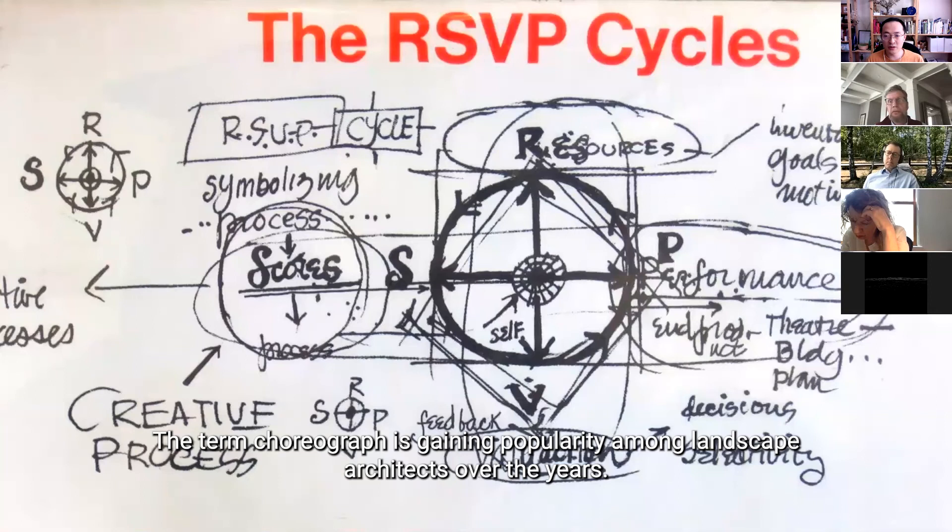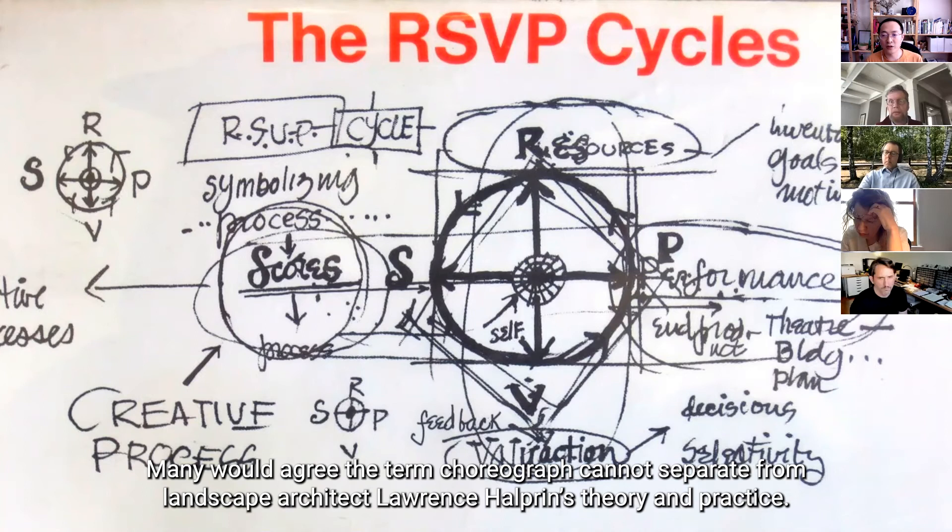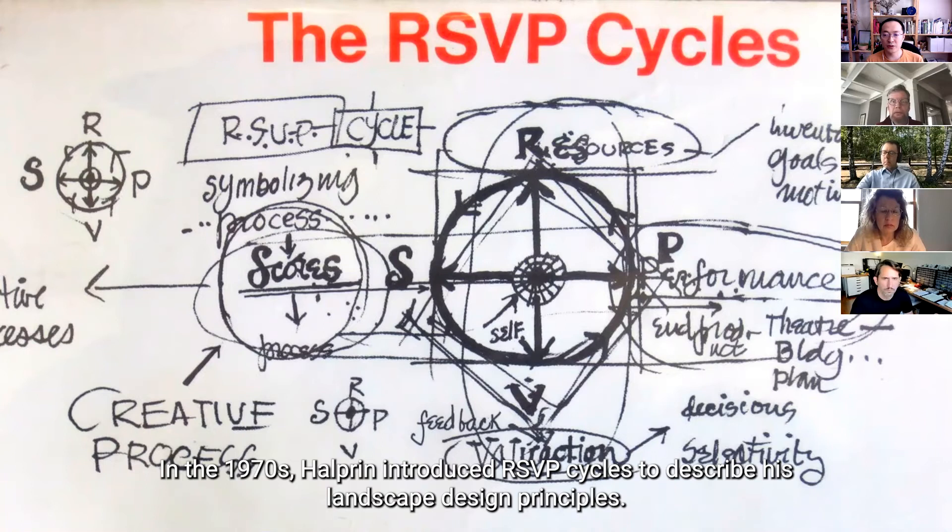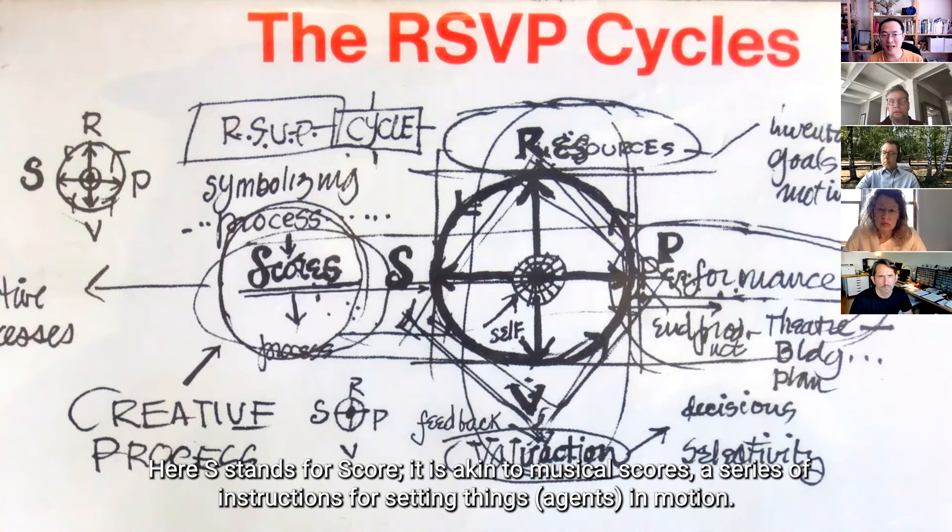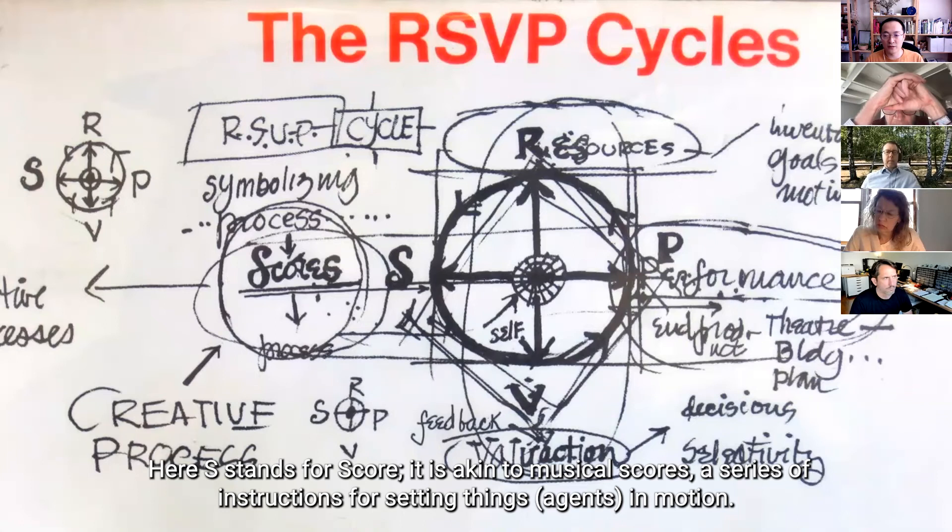So, the term choreograph is gaining popularity among the landscape architects over the years. And many would agree that the term choreograph cannot be separated from landscape architect Lawrence Halprin's theory and practice. So, in the 70s, Halprin introduced RSVP cycle to describe his landscape design principles. And here, S stands for score. And it is not the grade or score you get from a test. It's akin to the musical scores. It's basically a series of instructions for setting things in motion or setting agents in motion. So, Halprin, in his book, writes, scores communicate but do not control. So, this apparent wordplay on Wiener's original book title suggests that Halprin found recursive thinking in cybernetics useful, but he wanted to see it in a different light rather than controlling communication.